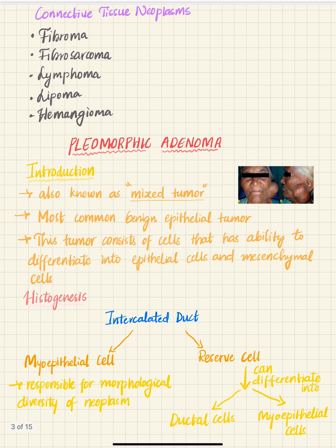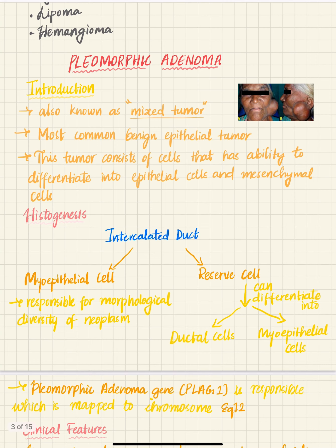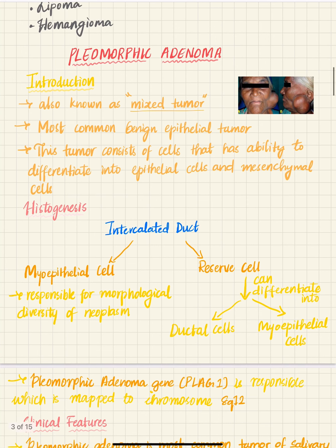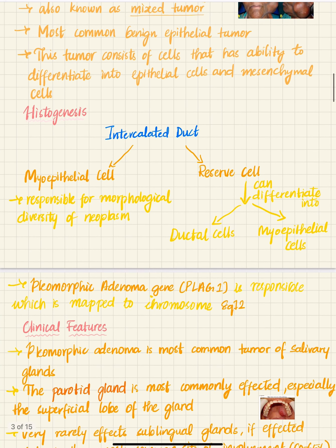The most important tumor is pleomorphic adenoma, also known as mixed tumor or mixed salivary gland tumor. It is the most common benign epithelial tumor. This tumor consists of cells that have the ability to differentiate into both epithelial cells and mesenchymal cells. When it comes to histogenesis, the parotid gland contains intercalated ducts.